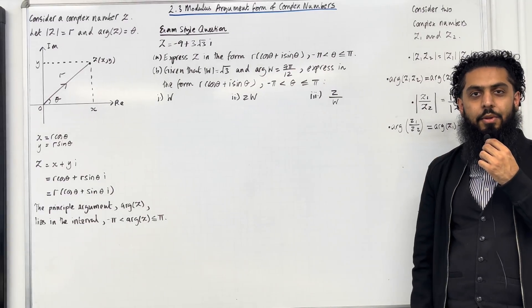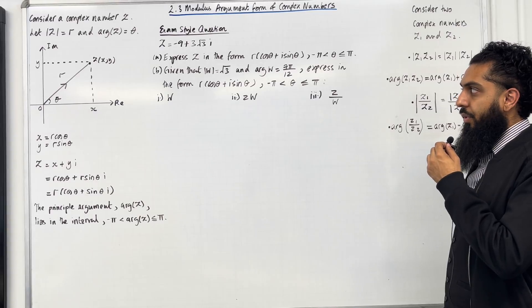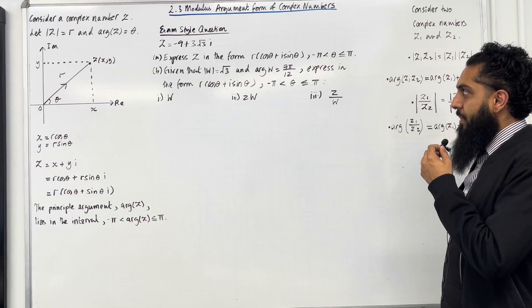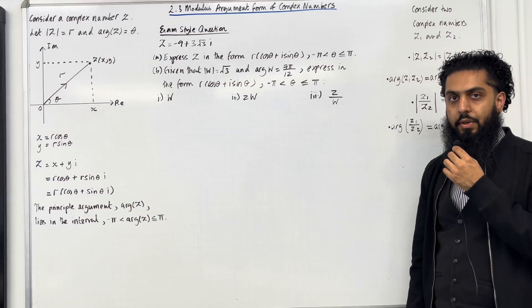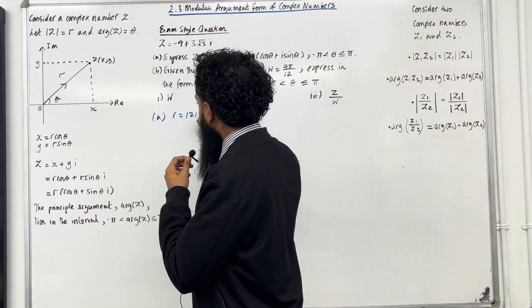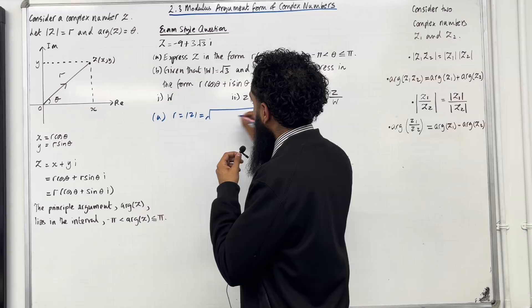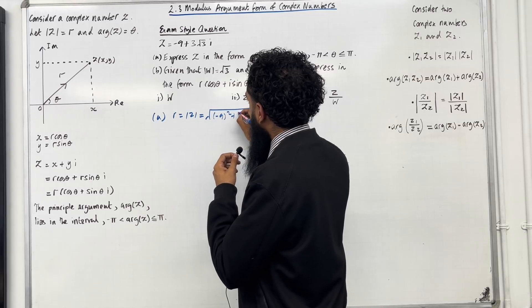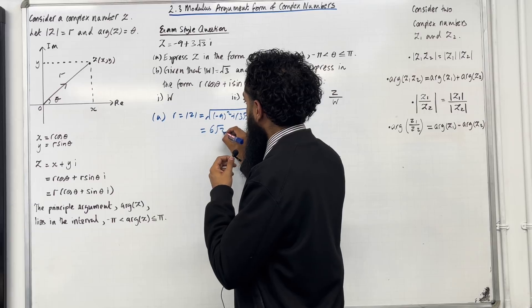Here is another exam-style question. z = −9 + 3√3 i. Part a: express z in the form r(cos θ + i sin θ) where −π < θ ≤ π. Let r = |z| = √((−9)² + (3√3)²) = √(81 + 27) = √108 = 6√3.